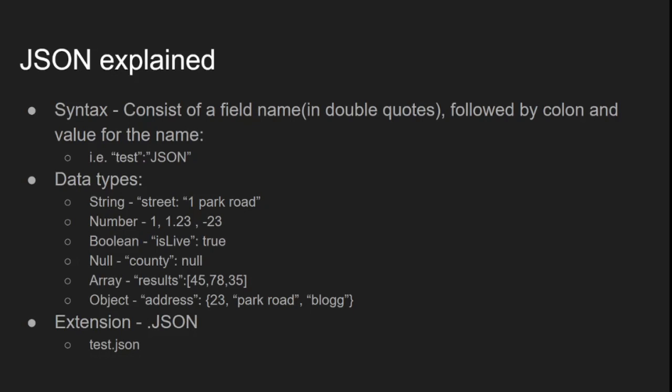Next we have numbers. The name would be 'number' and the value could be 1, a decimal, or a negative number. Then we have booleans — for example, 'is person alive?' Yes or no becomes true or false, so true is a boolean value.